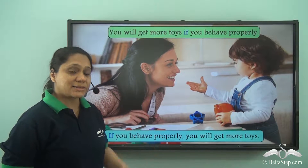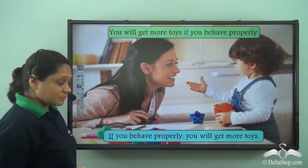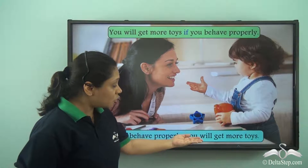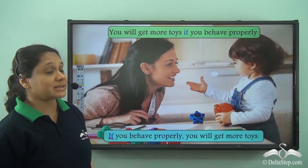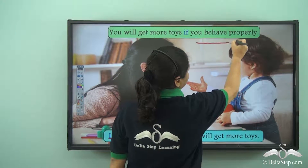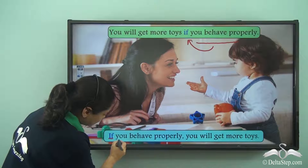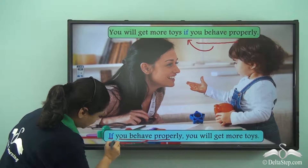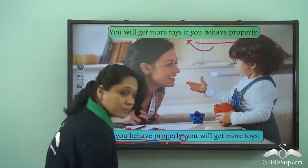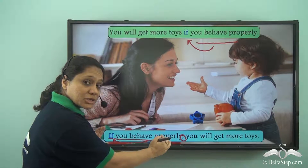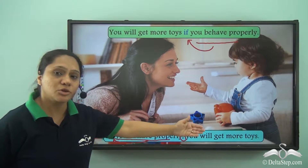We can also write the sentence in another way — we can start the sentence with 'if': If you behave properly, you will get more toys. In both cases, the condition follows 'if', whether we write it in the middle or at the start of the sentence. We then put a comma to make the condition separate from the action that depends on it: you will get more toys.